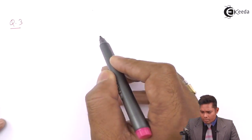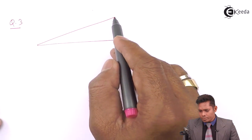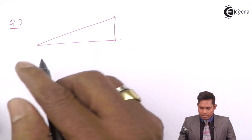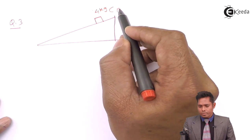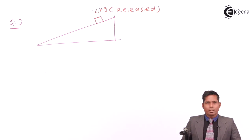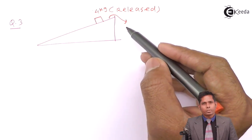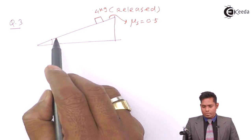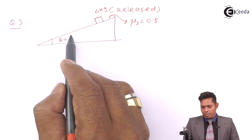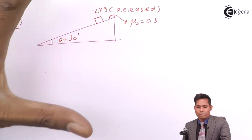Today we will take one more numerical, that is question number 3. Let us see the question graphically, then we will solve. I have an inclined plane and the object is placed on it. The object has a mass of 4 kg and is released at a point. This surface has some friction, say 0.5. The angle is 30 degrees. So this is a block of mass 4 kg released on an inclined surface with friction.